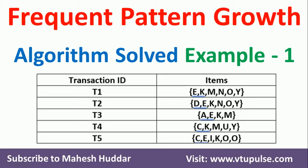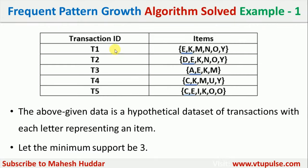Welcome back. In this video we will understand how to apply the Frequent Pattern Growth algorithm to a given set of transactions to find the frequent item sets and association rules. There are five transactions given, and in each transaction a few items were bought. The minimum support given to us is 3 — if an item set has frequency 3 or more, it is called a frequent item set.